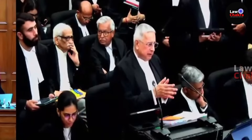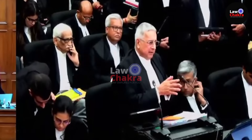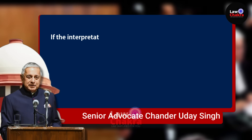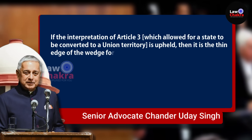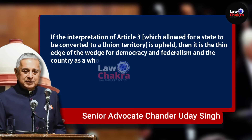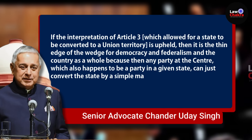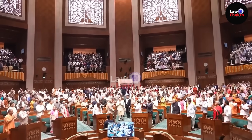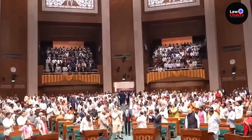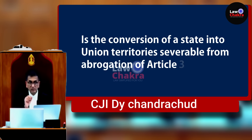Singh ने Article 3 की context में दो terms का use किया — interchange और convert। उनके according, Article 3 state को union territory में convert करने के लिए allow नहीं करता है। He added: 'If the interpretation of Article 3 which allowed for a state to be converted to a union territory is upheld, then it is the thin edge of the wedge for democracy and federalism, because then any party at the center can just convert the state by a simple majority in the state legislature and simple majority in Parliament।' Parliament के पास ऐसी कोई vested power नहीं है to degrade the constitutional status of a state to a union territory। इन submissions के बाद, the Chief Justice of India ने उनसे पूछा: 'Is the conversion of a state into union territories severable from the abrogation of Article 370?' Singh replied: 'The two are completely separate।'